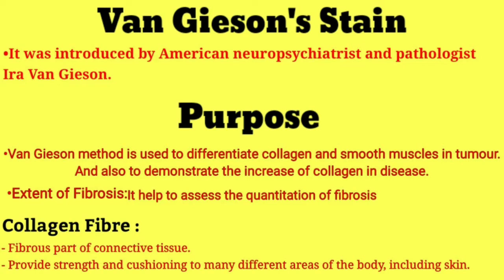Second purpose: extent of fibrosis. It helps to assess the quantitation of fibrosis. If fibrosis is forming in our organs, we use Van Gieson's stain because it is helpful in detecting fibrosis.